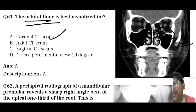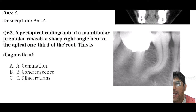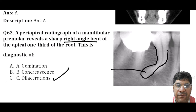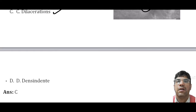A periapical radiograph of a mandibular premolar reveals a sharp right-angle bend at the apical one-third of the root. This would indicate dilaceration — a sharp bend or curve in the root or crown of a formed tooth.